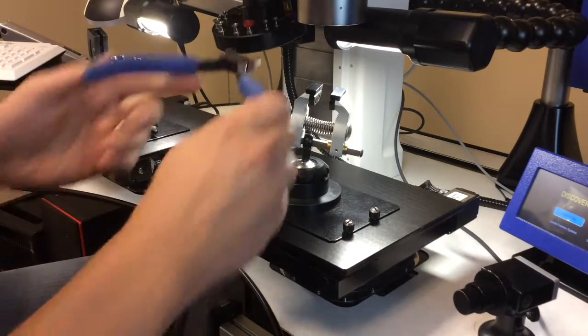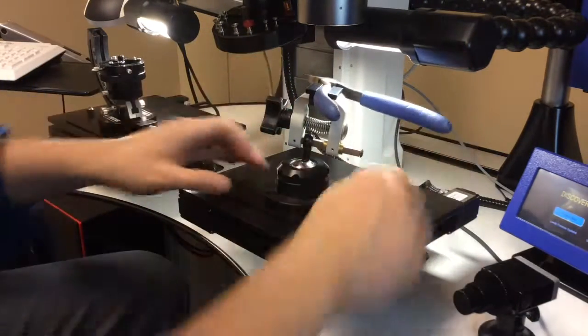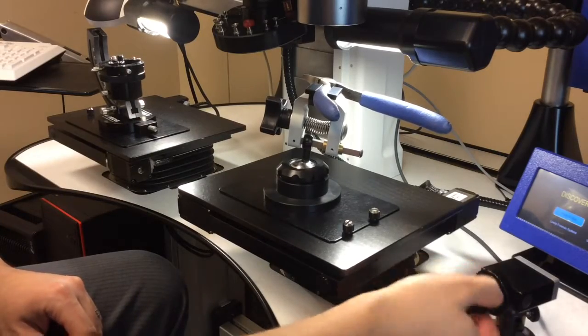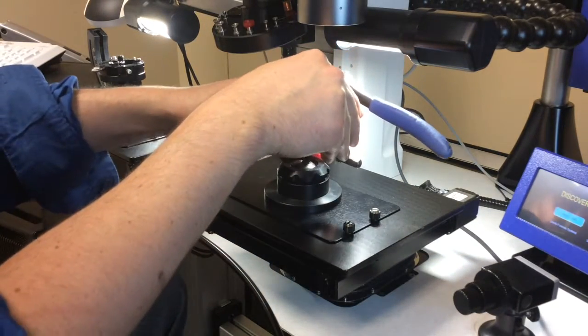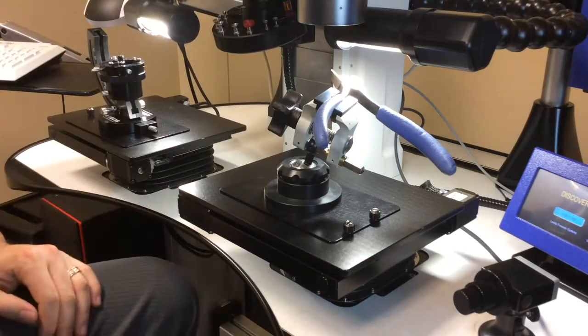I'm going to go ahead and insert a tool, clamp my vise down, and so now I can freely position, tip, tilt, and rotate to get the right viewing angle for the inspection of my tool marks.